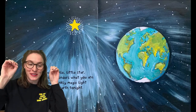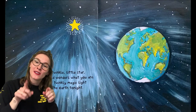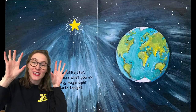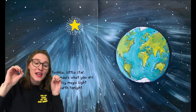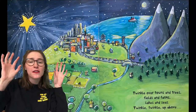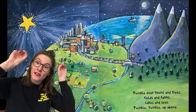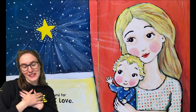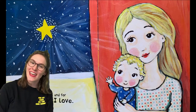Twinkle, twinkle, little star, the whole world wonders what you are. Shine your twinkly magic light over all the earth tonight. Twinkle over towns and trees, fields and farms, lakes and seas. Twinkle, twinkle up above, for me and for the one I love. The end.